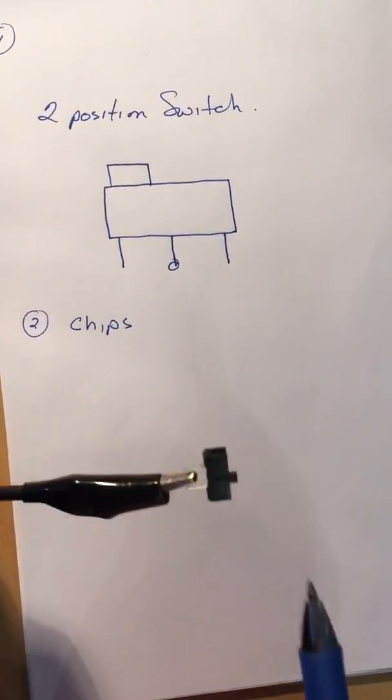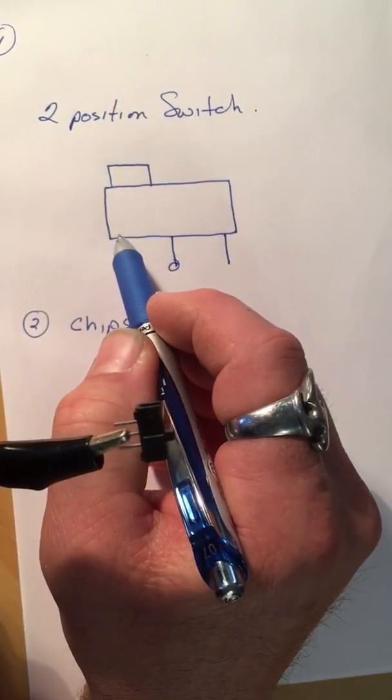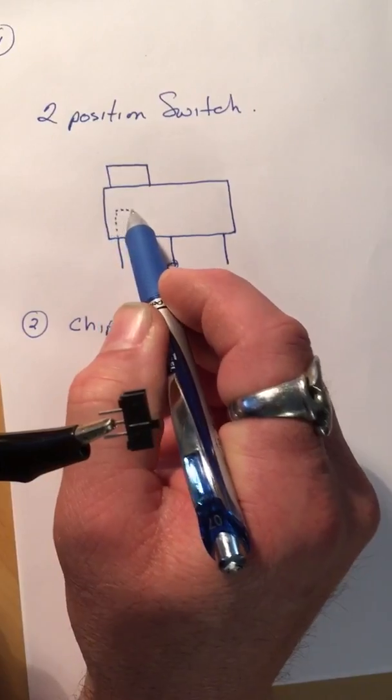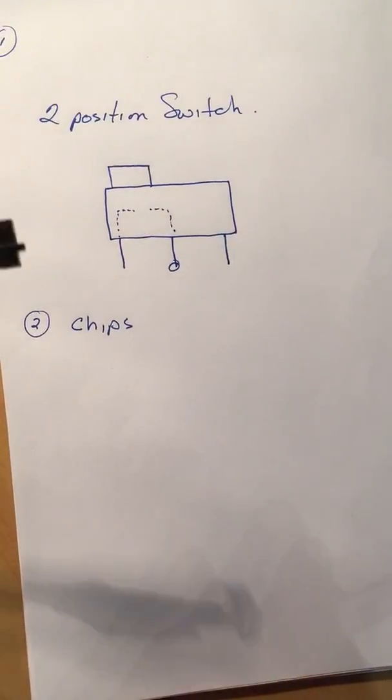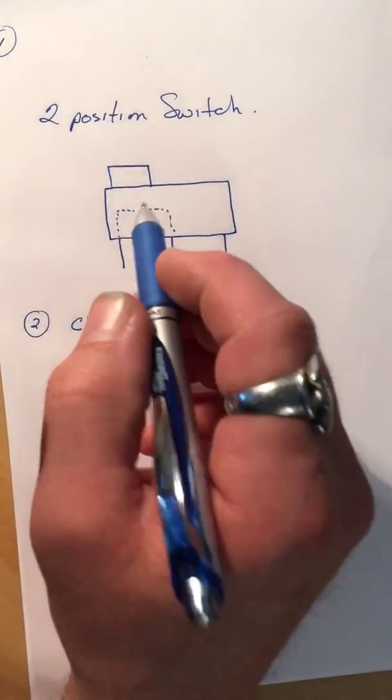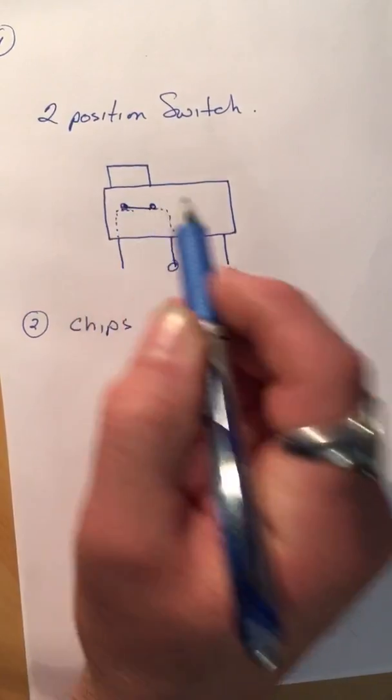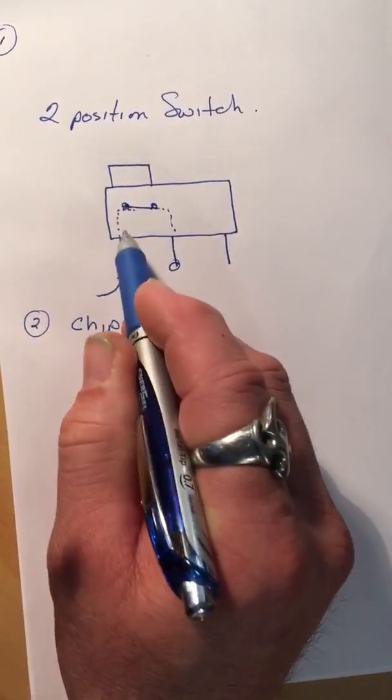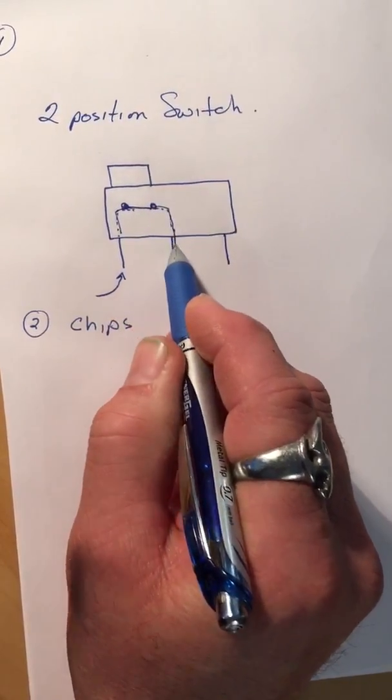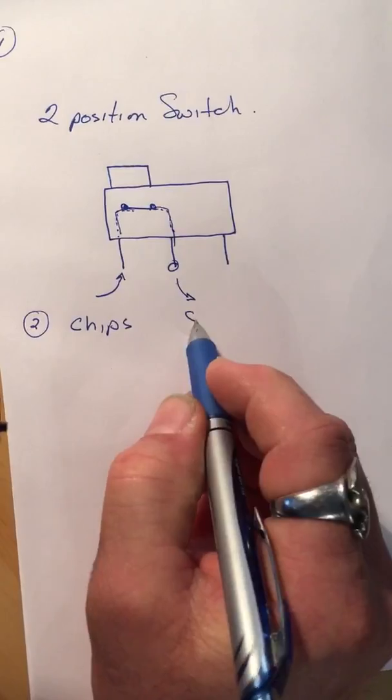So when I move this switch to this position, what's that actually doing? Internally there's these contacts just like in a normal single pole switch, and when you move it to that switch, it closes those contacts there. So now you get power that goes in through here and through there and then out to there. So the middle pin is your common.